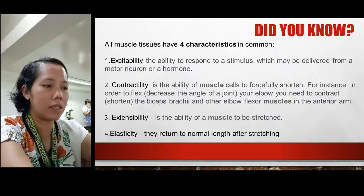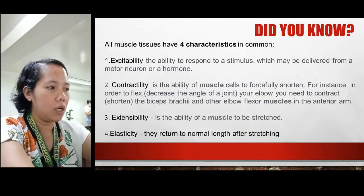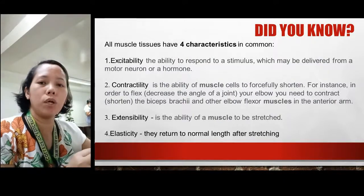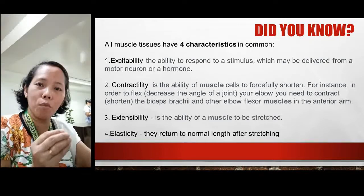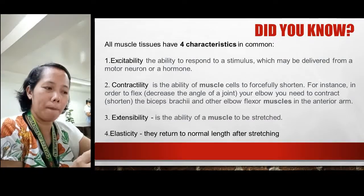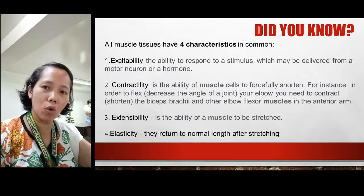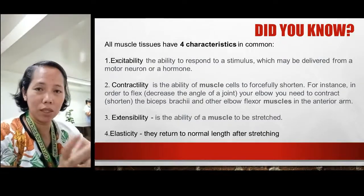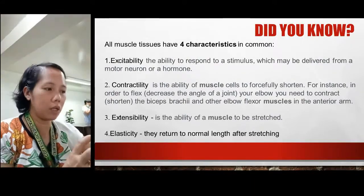Number two, contractility is the ability of the muscle cells to forcefully shorten. The muscle can lengthen or shorten — it can stretch or become shorter. Just like a rubber band, it can be stretched. That is contractility — the ability of the muscle cells to forcefully shorten.